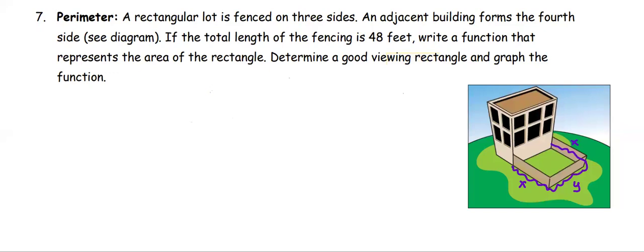This problem: a rectangular lot is fenced on three sides, and an adjacent building forms the fourth side. See the diagram. If the total length of the fencing is 48 feet, write a function that represents the area of the rectangle. Determine a good viewing rectangle and graph the function.